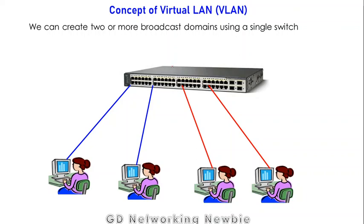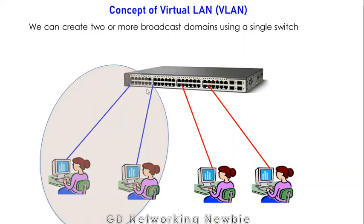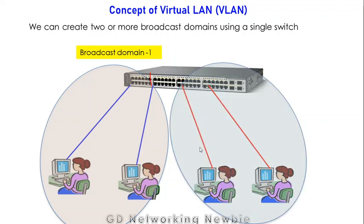In the switch we have multiple ports. What we do is divide those ports: some ports we configure to be members of one broadcast domain, and some ports we configure to be members of another broadcast domain. For instance, these ports here are configured to belong to broadcast domain one, and the remaining ports are members of broadcast domain two.